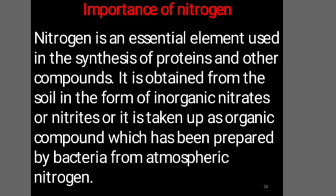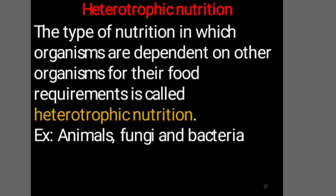What is the importance of nitrogen to the plants? Nitrogen is an essential element used in the synthesis of proteins and other compounds. It is obtained from the soil in the form of nitrates, or it is taken up as organic compounds which have been prepared by bacteria from atmospheric nitrogen. In another type of nutrition called heterotrophic nutrition, organisms are dependent on other organisms for their food. This takes place in animals, fungi, and bacteria.